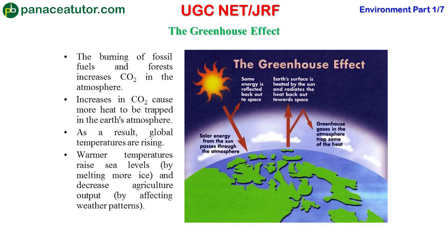The next impact is the greenhouse effect. Solar energy from the sun passes through the atmosphere and some energy is reflected back into space, but due to the burning of fossil fuels and forests, CO2 concentration increases in the atmosphere. CO2 is a greenhouse gas which has the tendency to trap heat in the Earth's atmosphere. As a result, the Earth's temperature rises, causing global warming — glaciers and seas will melt, and this will affect agricultural output.